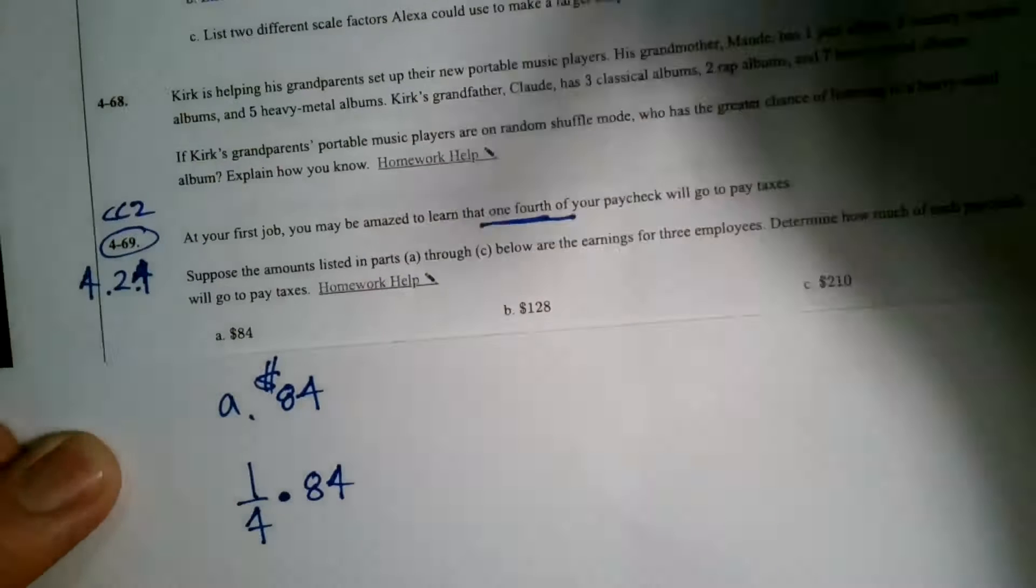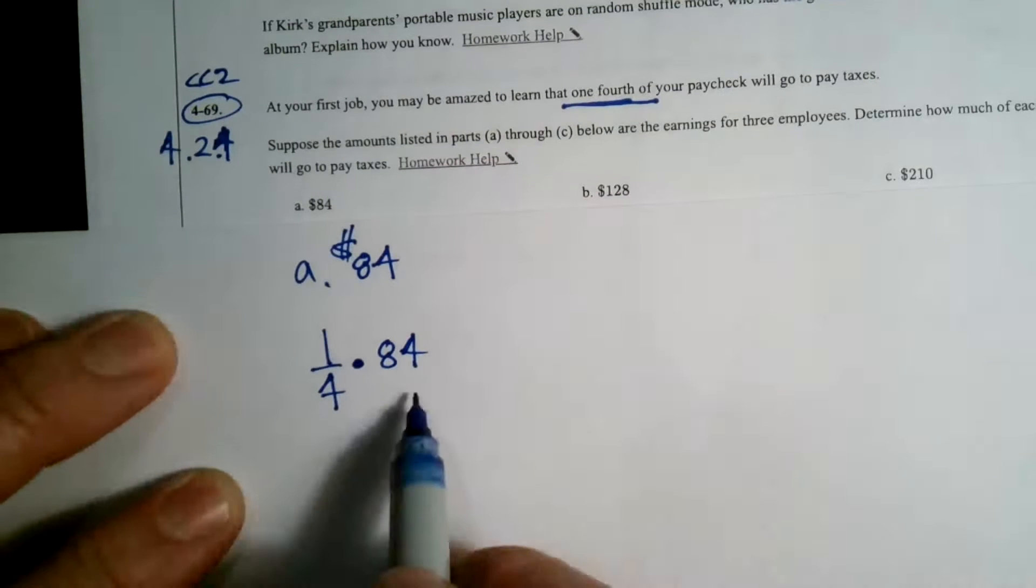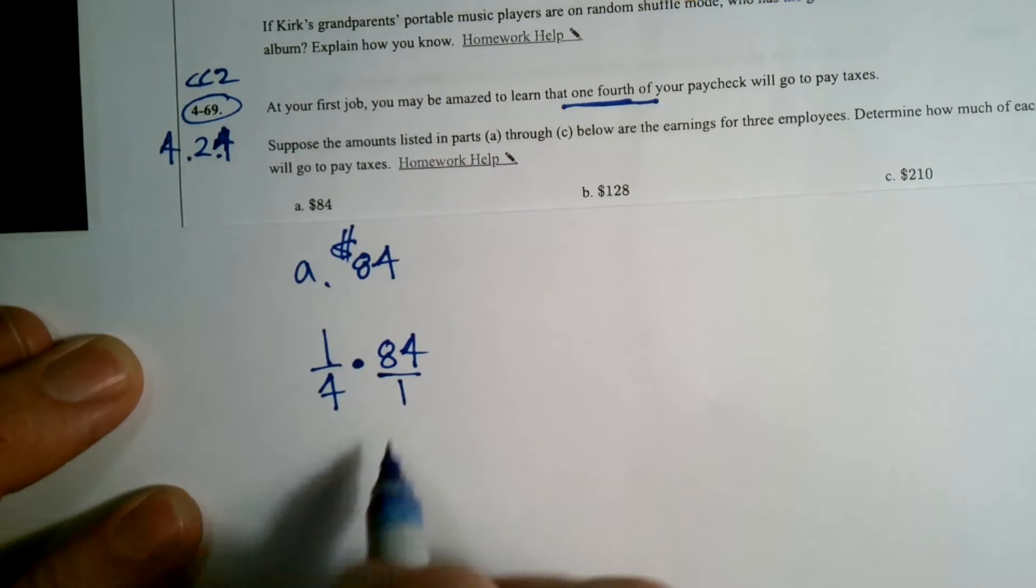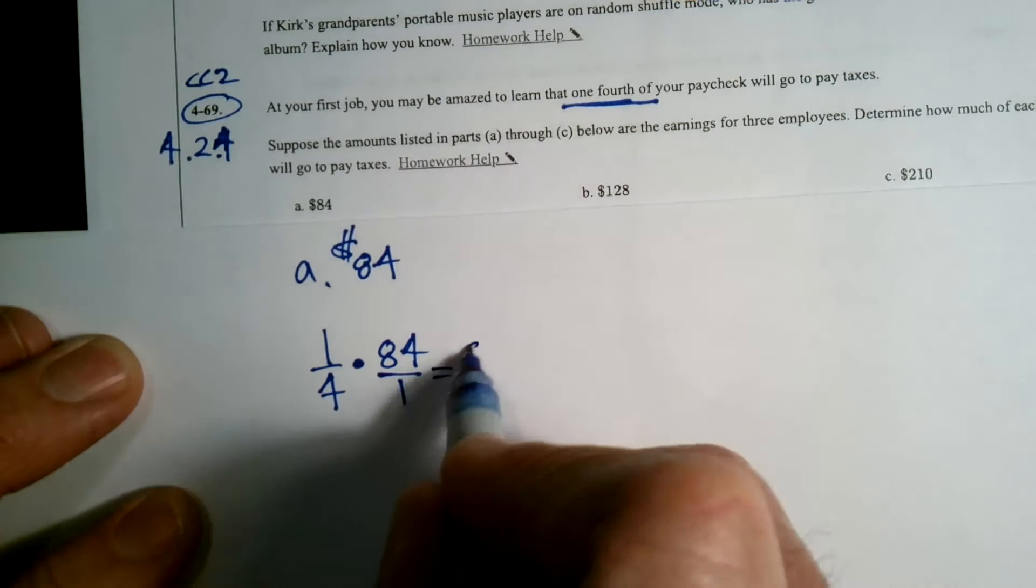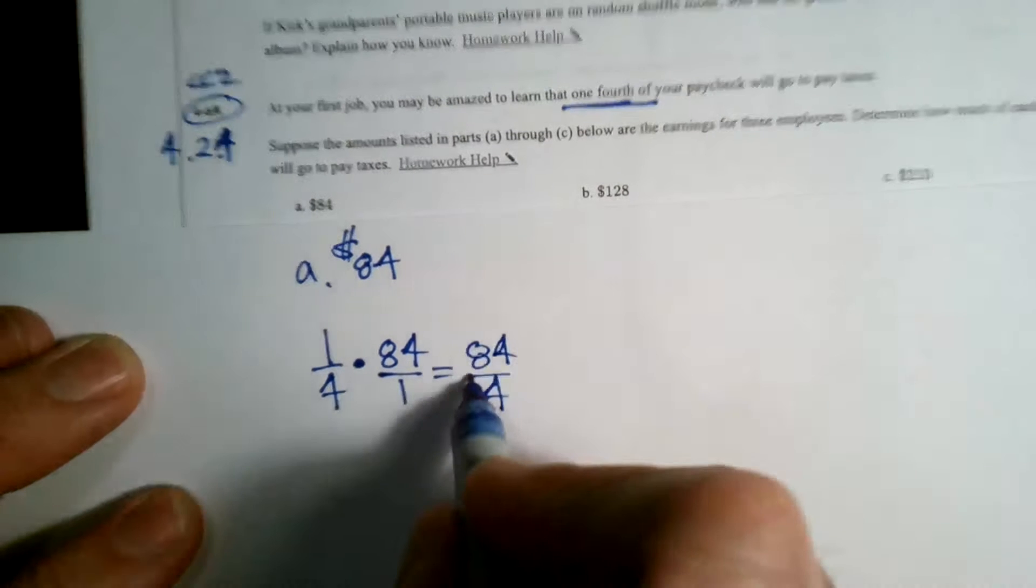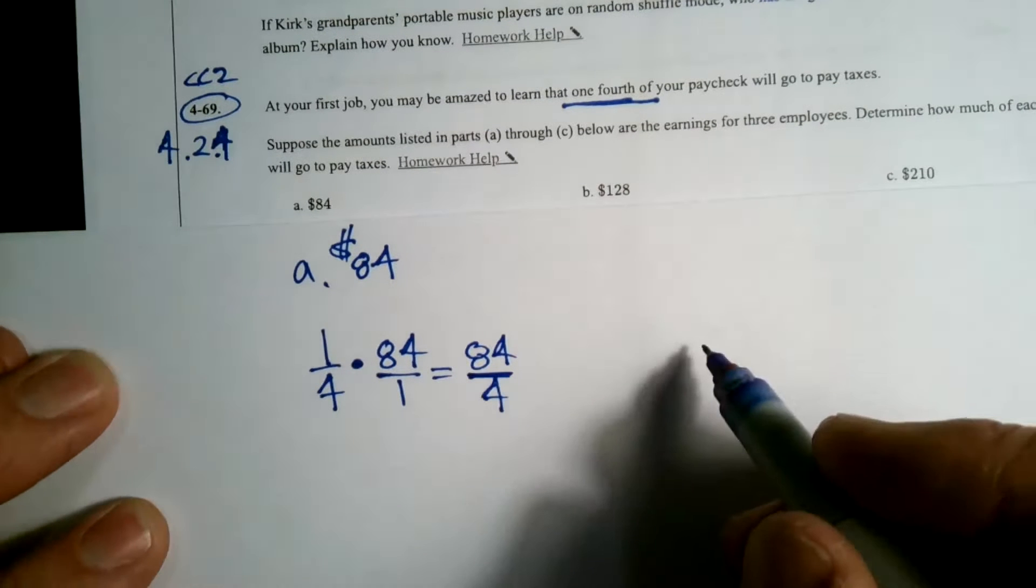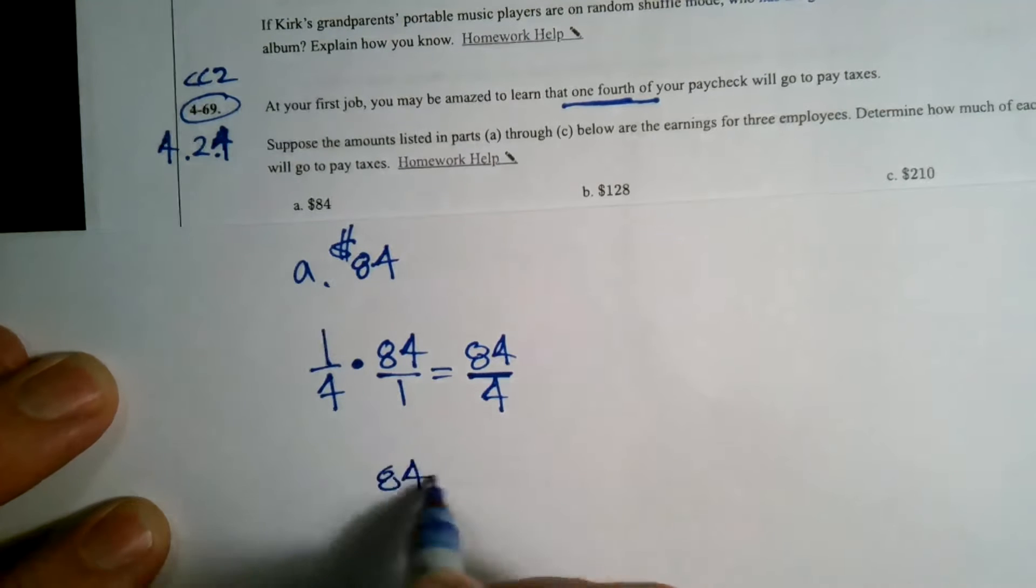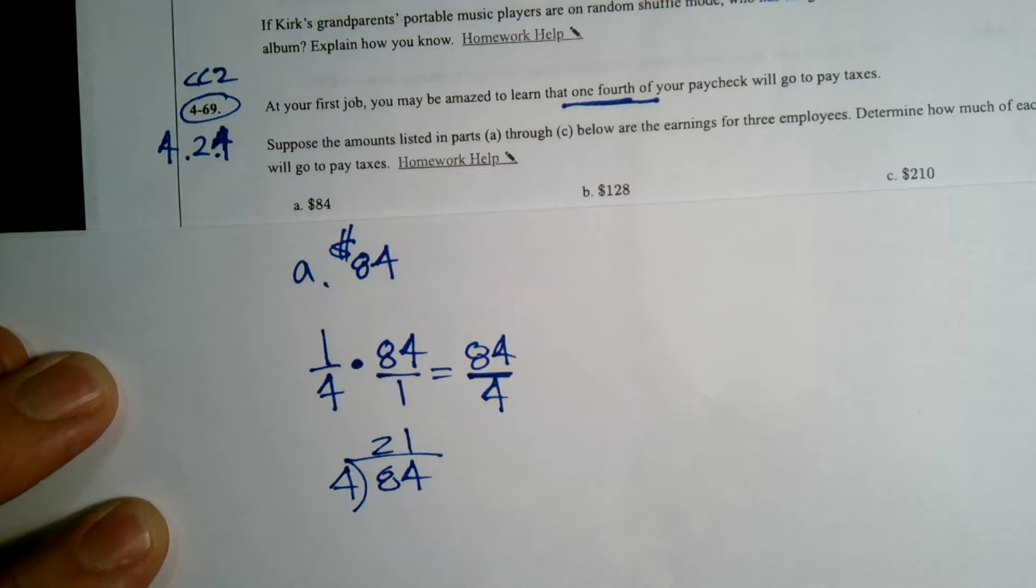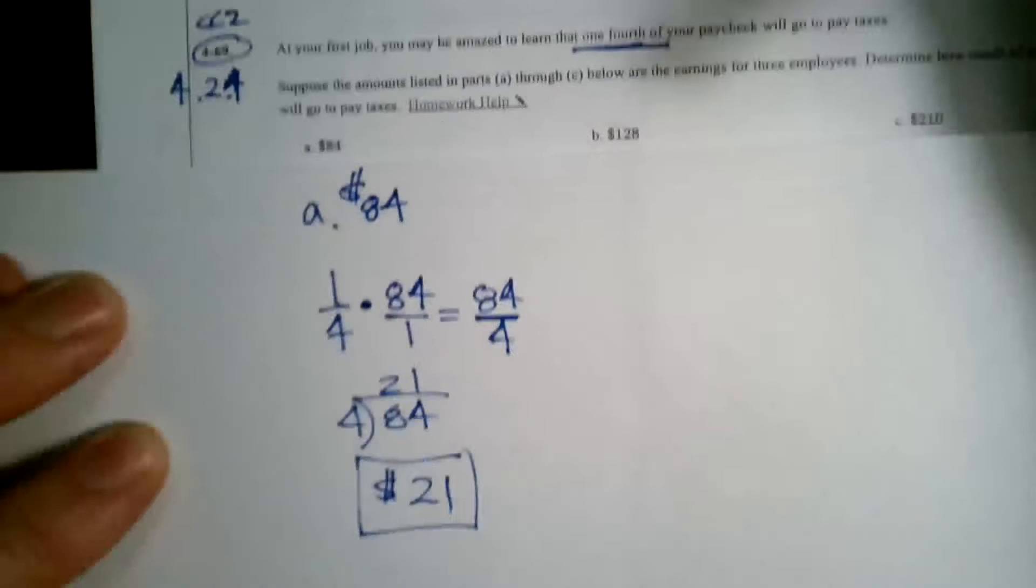One fourth of 84, you have multiplication, a fraction times a whole number. How do we do that? Put the whole number over one. We can multiply straight across, which I get 84 over four. And then we know that the fraction symbol also means division. So it's 84 divided by four. And when I do the division, I get 21. So $21 of that 84 will go to taxes. There's my answer for A.